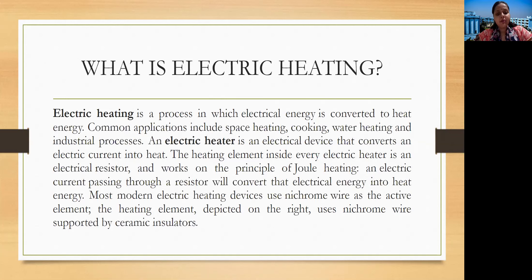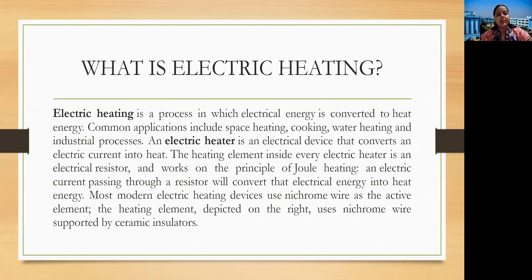In modern electric heating devices, nichrome wire is mainly used. The heating element uses nichrome wire supported by ceramic insulators. Since nichrome wire produces the highest amount of heat, it must be surrounded by an equivalent insulating material, and nowadays these nichrome wires are surrounded with ceramic insulators.